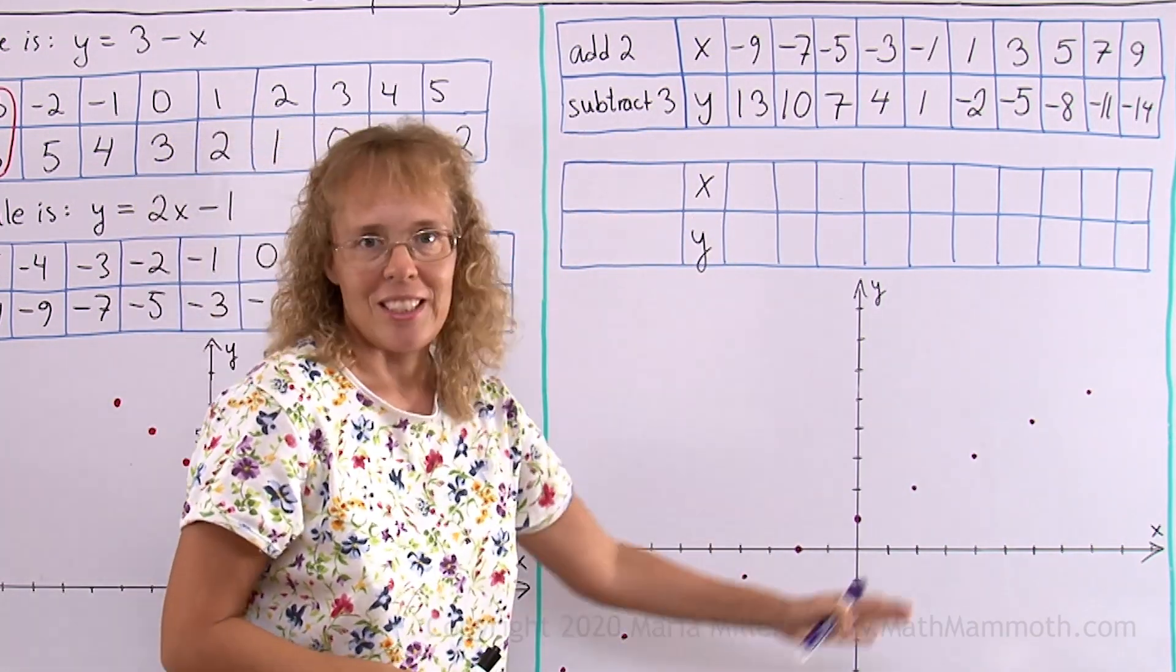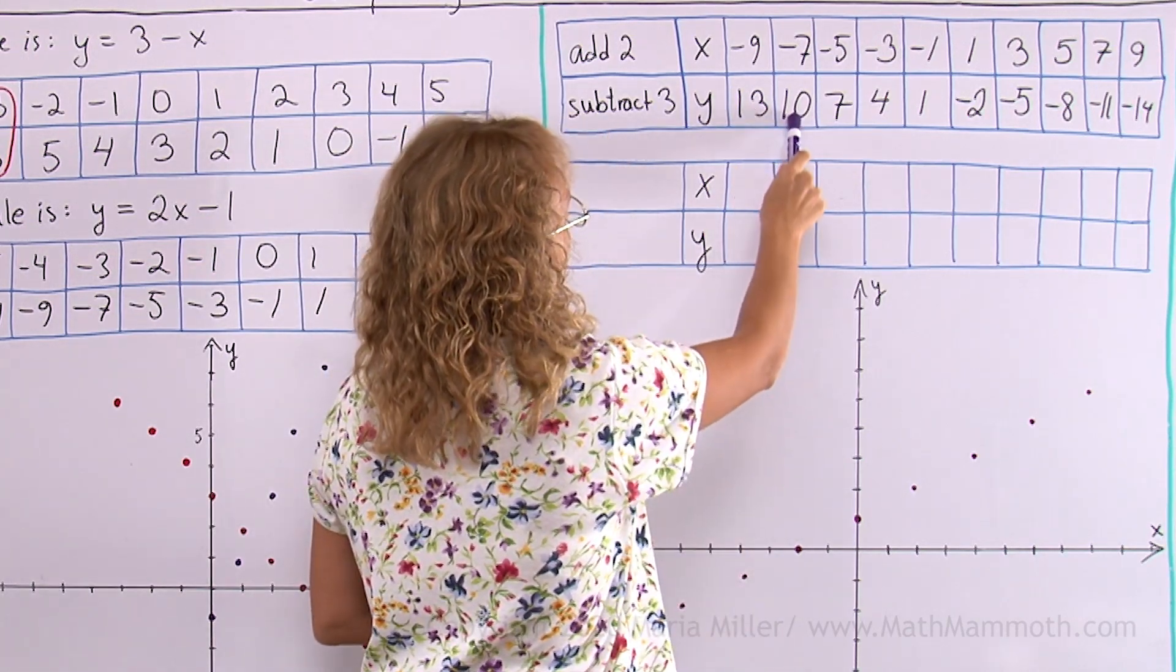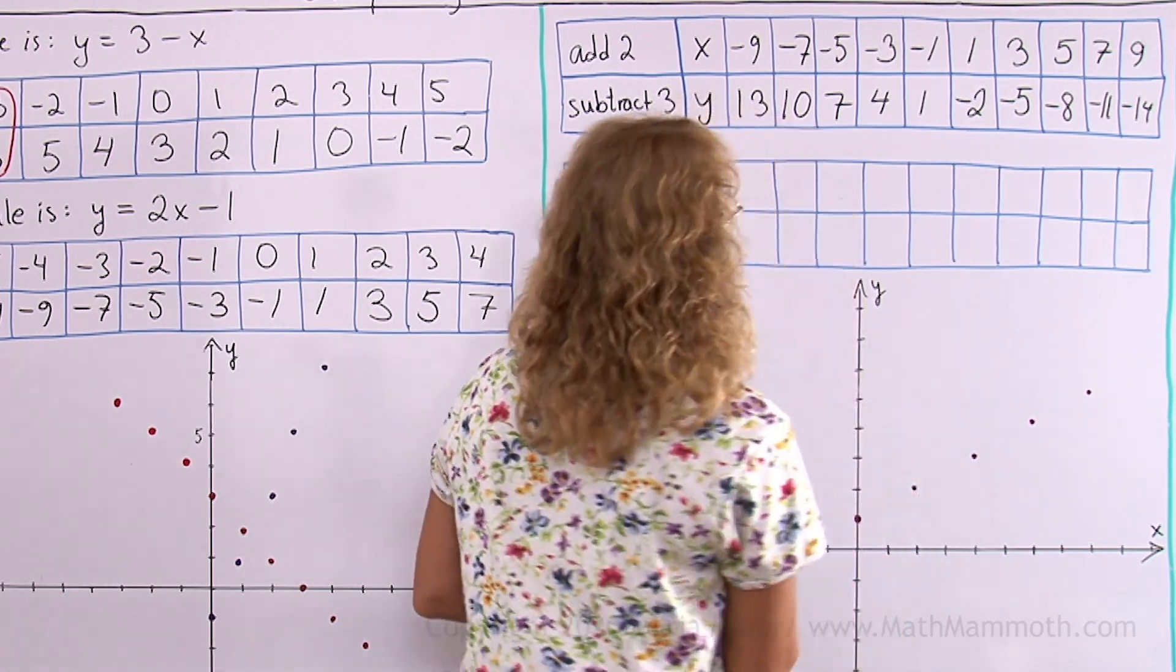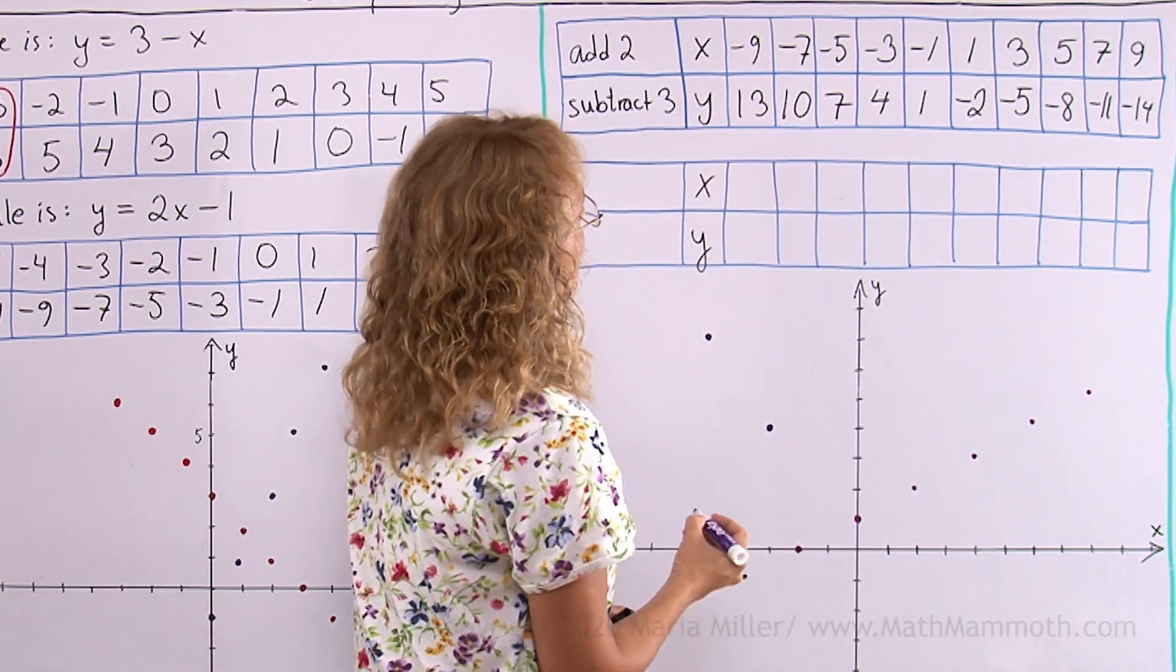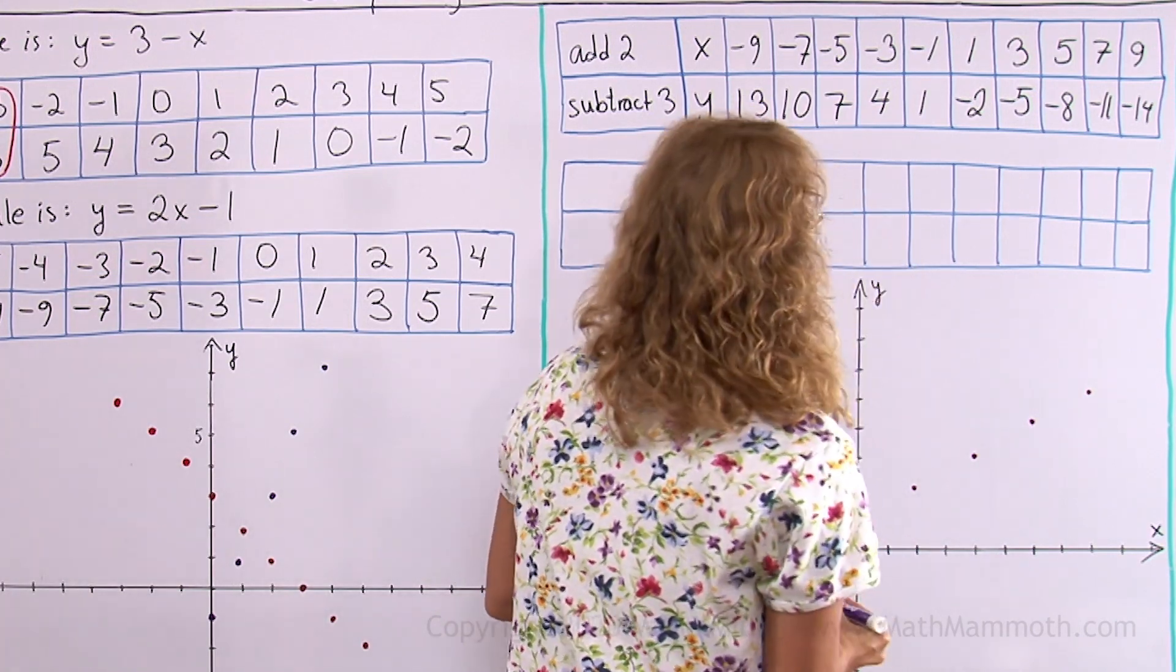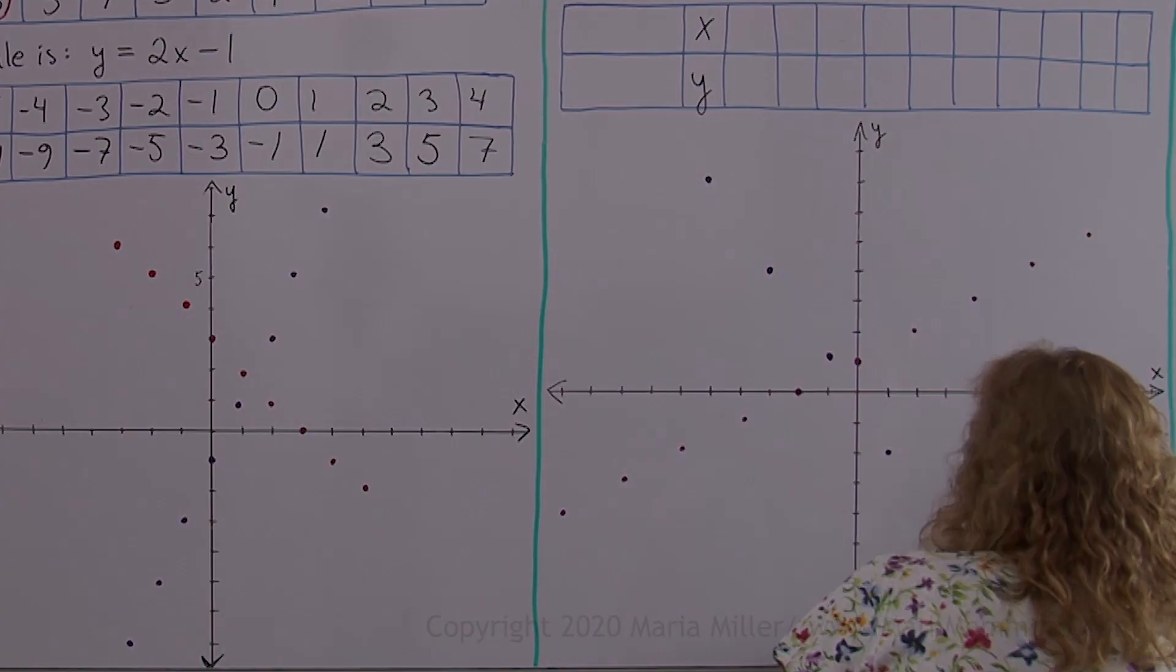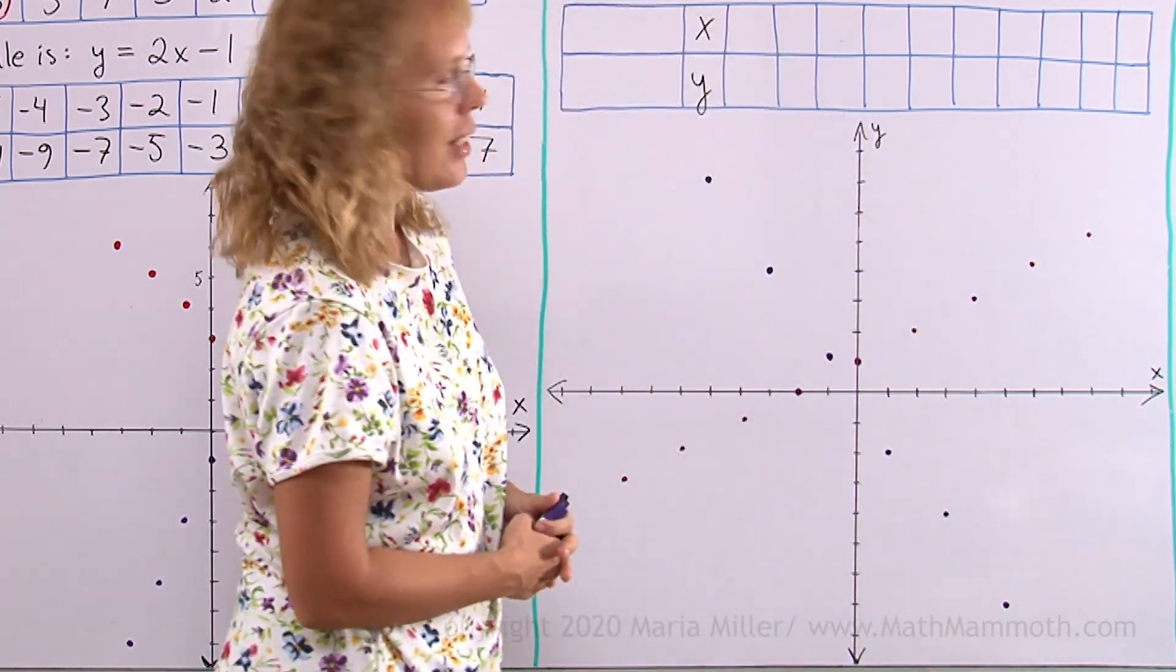Again, some of those points won't fit on my grid here, but we'll do what we can. This won't, this won't. Let's try that. x equals minus 5 and y is 7. x is minus 3 and y is 4. Minus 1, 1. x is minus 1 and y is 1. x is 1, y is minus 2. x is 3, y is minus 5. That's all I can put there. But you can see the general idea. It's a linear pattern.